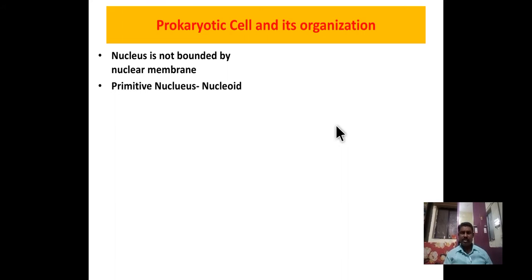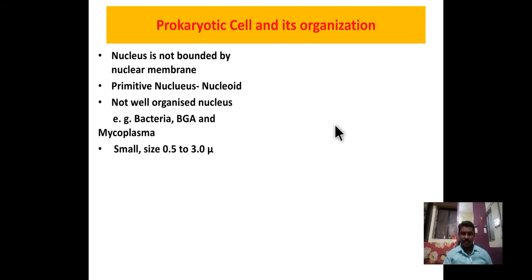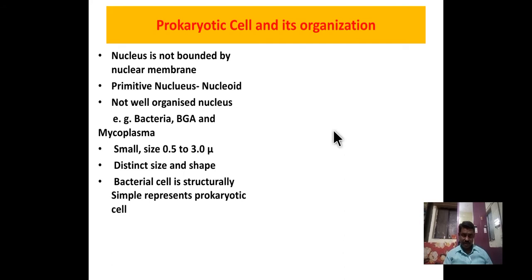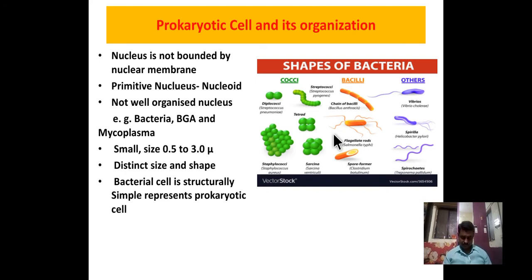The primitive nucleus is also called a nucleoid — it does not have a well-organized nucleus. Prokaryotic cells are very small, ranging from 0.5 micron to 3 micron in size. These cells show distinct variation in size and shape. Prokaryotic cells multiply very rapidly compared to eukaryotic cells and show the simplest organization. The bacterial cell is structurally simple and represents the prokaryotic cell.